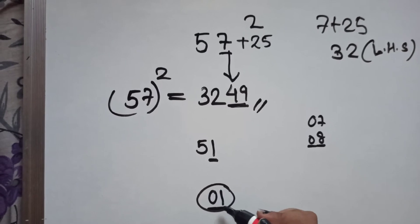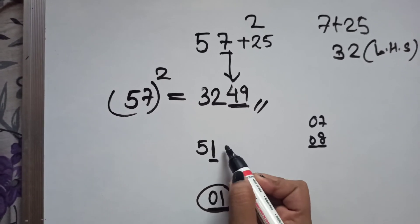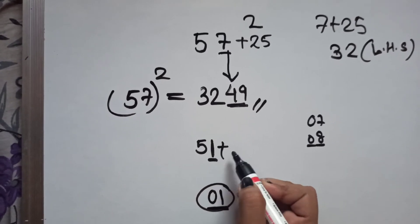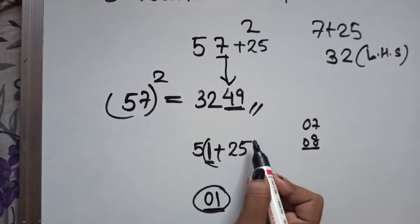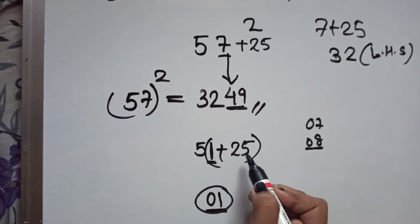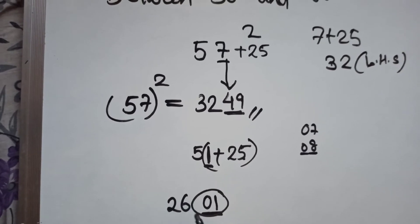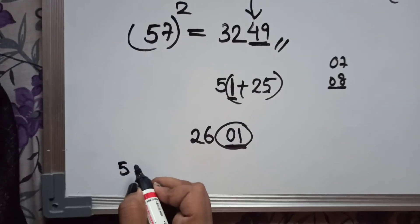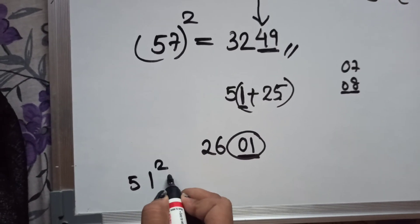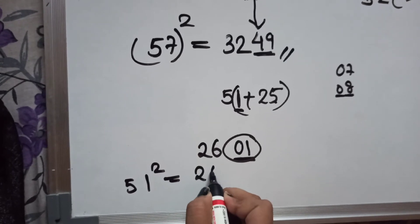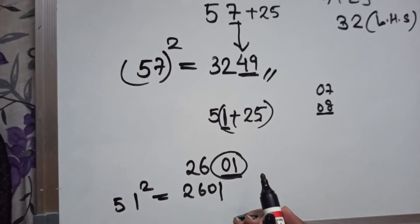Now add 25 to the unit digit: 1 + 25 = 26 as the left-hand side. So 51² = 2601.